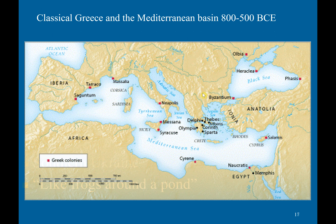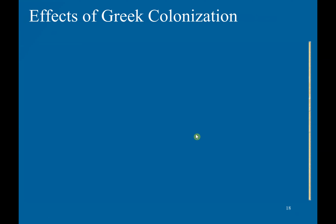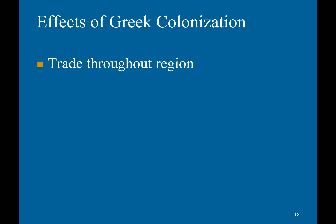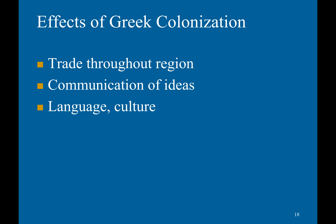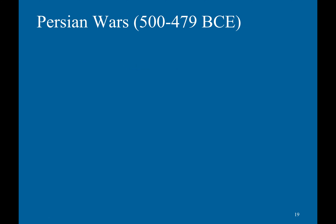This map demonstrates some of the Greek colonies, including Salamis, Heraclea, Olbia, Byzantium, Neapolis, Messana, Syracuse, Cyrene, and others. Greek colonization increased trade throughout the region, the communication of ideas, language and culture, as well as producing political and social effects.